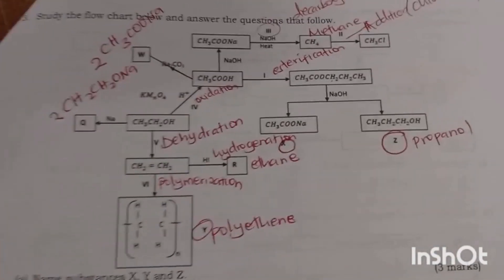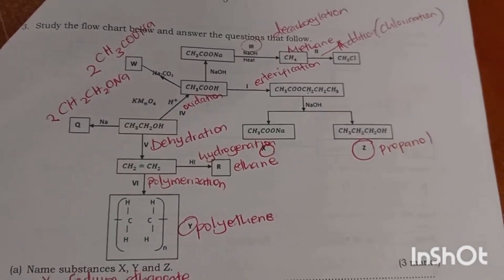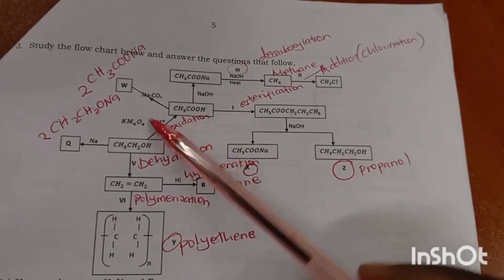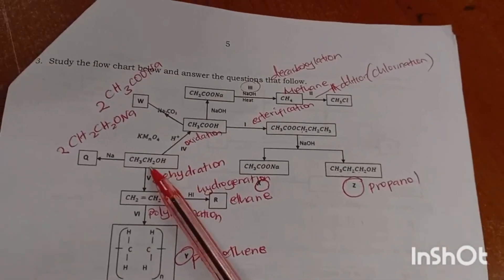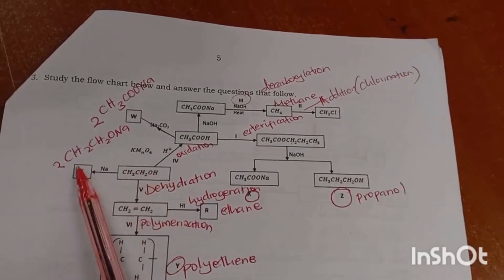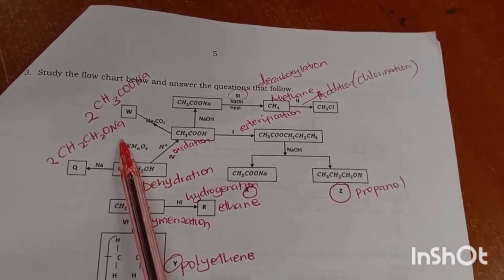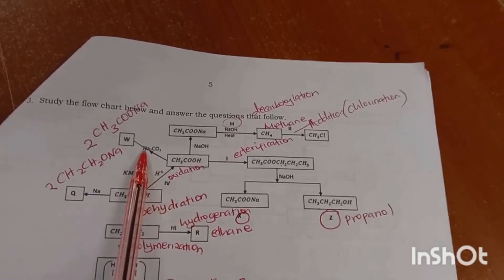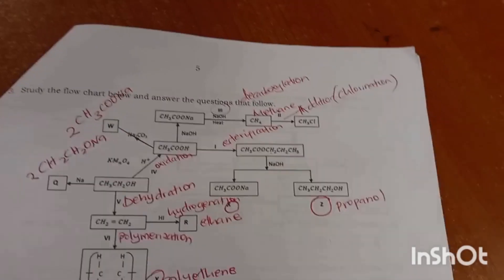This is number three — another flowchart. Study it and answer the questions. Starting with ethanoic acid: when you add sodium you get sodium ethanoate; when you add sodium carbonate you also get ethanoic acid reactions.